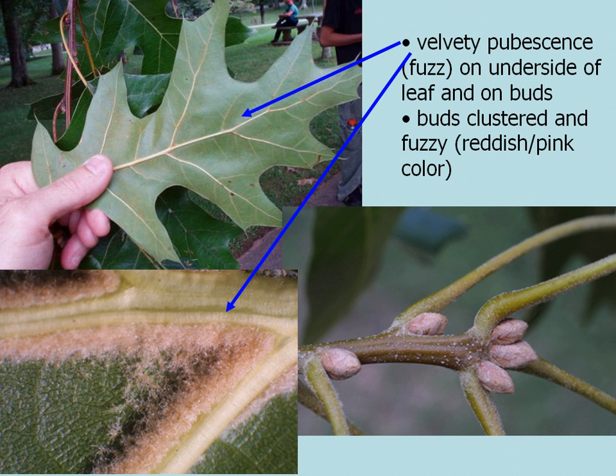But the giveaway for black oak is the velvety pubescence, or fuzziness, on the underside of the leaves and on the buds. The buds are kind of clustered as all oaks are, especially at the terminal bud, and have kind of a reddish pink color to them.